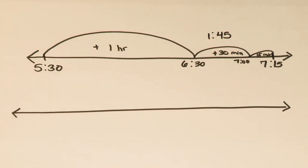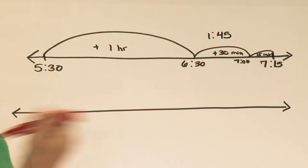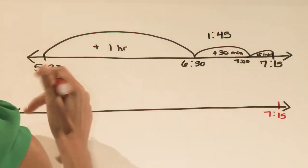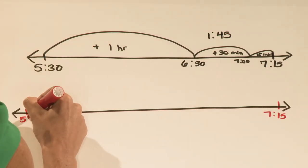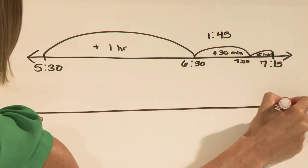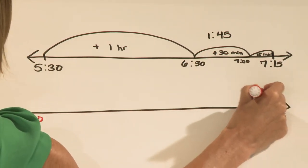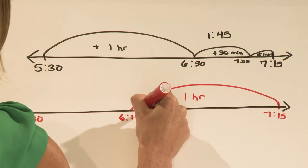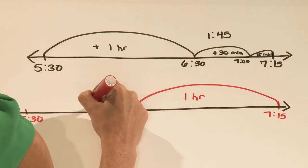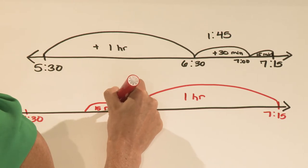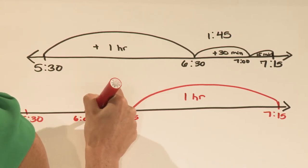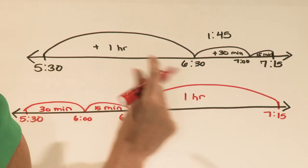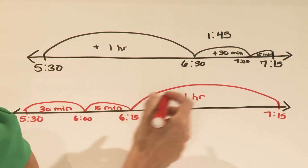I can also look at this another way by jumping backwards. So I can look at my end time of 7:15 PM and start there and jump back to 5:30 PM. I can jump back one entire hour to 6:15 PM, jump back 15 minutes to 6 o'clock, and then jump back 30 minutes to 5:30 PM. I can then add up all my times again to come up with one hour and 45 minutes.